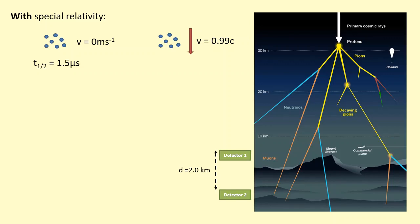The distance between the detectors for someone standing next to the detectors at rest is 2 kilometers, but what is the distance between the detectors according to the muons? To the muons, the detectors are whizzing past them, they're moving, so there's going to be some length contraction of the distance between the detectors. The distance between the detectors is going to appear shorter.